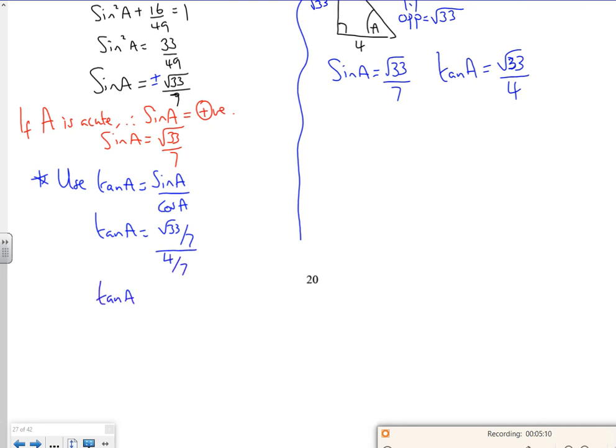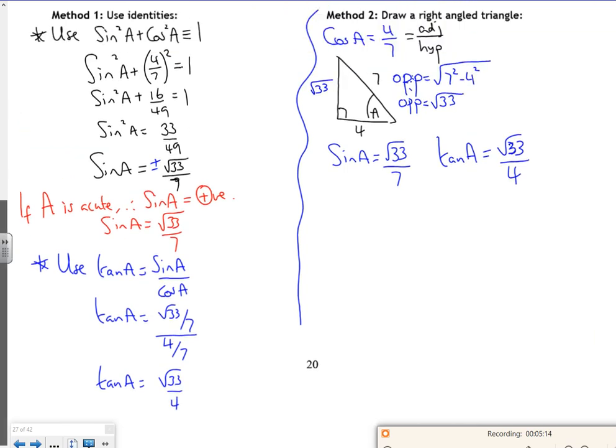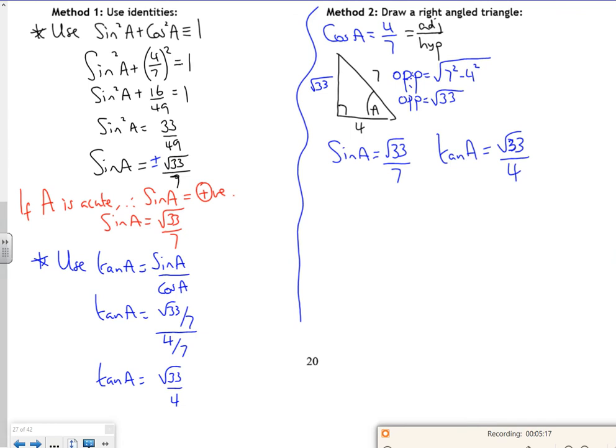The first year I started teaching, I taught with a triangle and somebody else in our office used sine squared plus cos squared is 1. You get the same response, but I think mine's a little bit less work and therefore, for me, better.